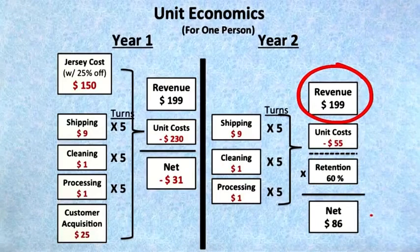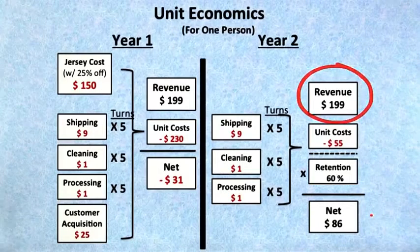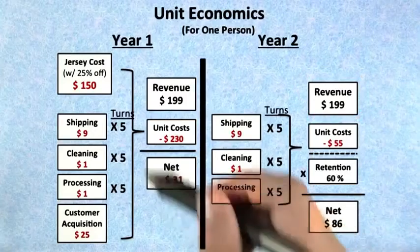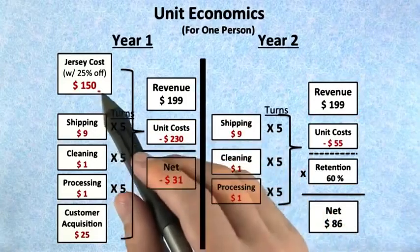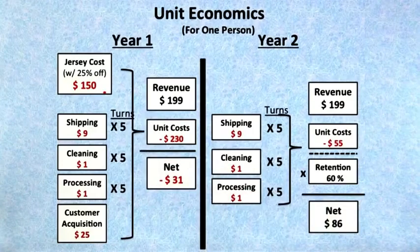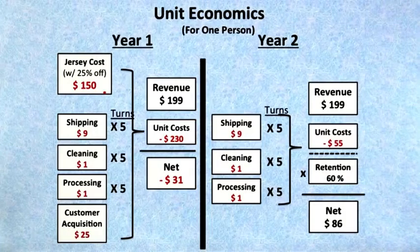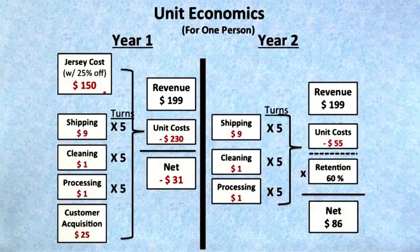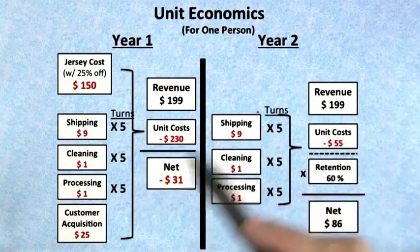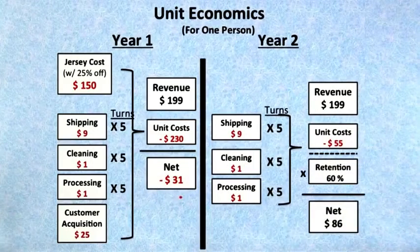You can immediately see some of the fallacies in these first back-of-the-envelope calculations. What if they use the jersey seven times in a year? You're actually buying more jerseys per year, and you're losing money in years two, three, and four. So you might want to limit the number of times you could rent the jersey in a year, or you could just be changing your revenue model. But this is a good visual way to start thinking about how to do the math for metrics that matter.